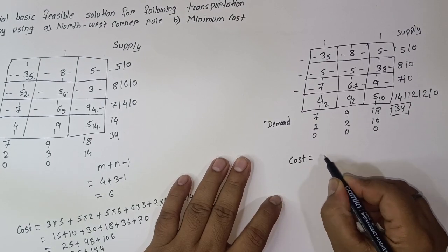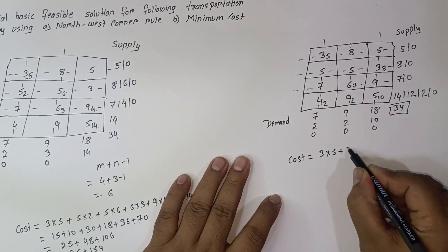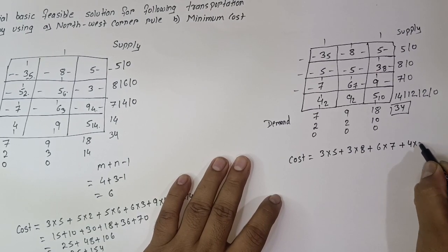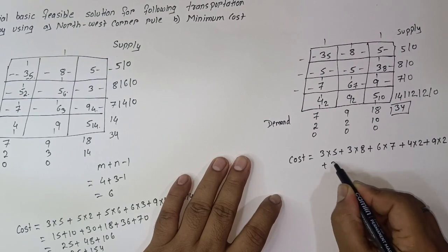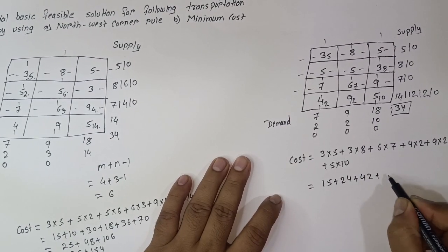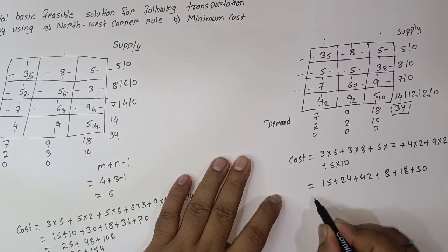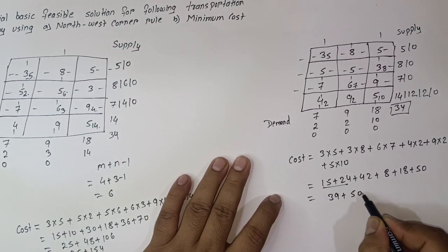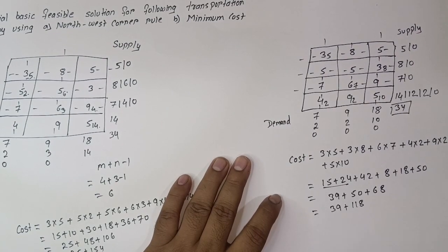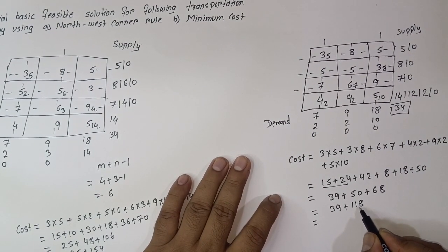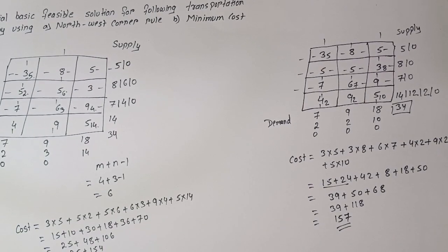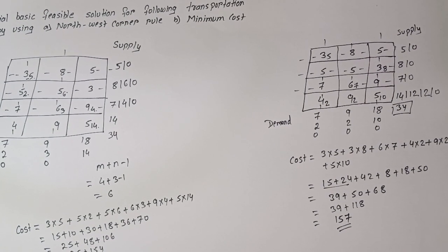The total cost using the Minimum Cost Method is: 3×5 + 3×8 + 6×7 + 4×2 + 9×2 + 5×10 = 15 + 24 + 42 + 8 + 18 + 50 = 157. So the cost of transportation using the Least Cost or Minimum Cost Method is 157. Thank you.